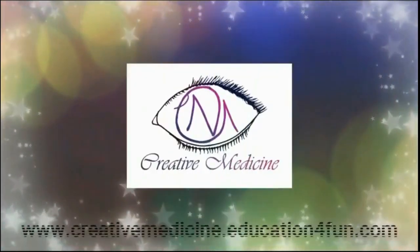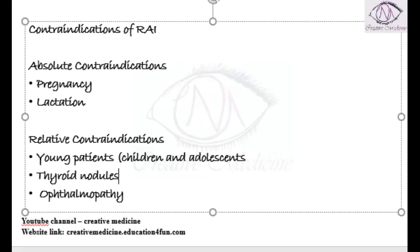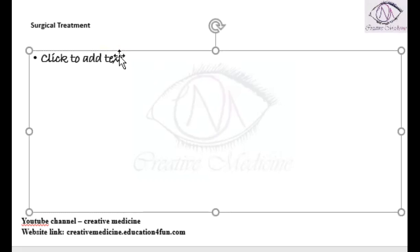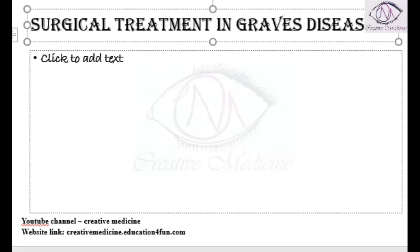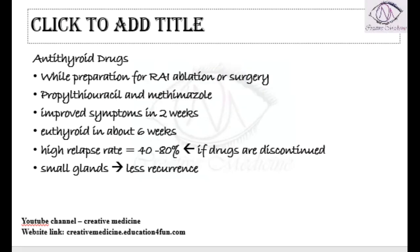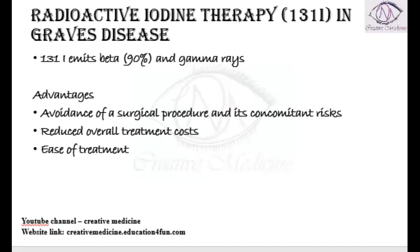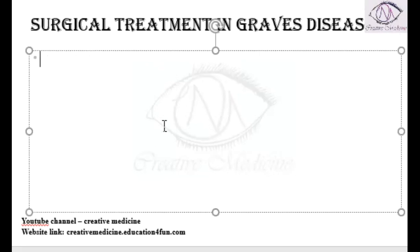Welcome to Creative Medicine. In this lecture we will learn about surgical treatment in Graves disease. In Graves disease, three types of treatment are available: antithyroid drugs, thyroid ablation with radioactive iodine-131, and thyroidectomy. Antithyroid drugs and radioactive iodine therapy have already been covered; now we focus on surgical treatment.